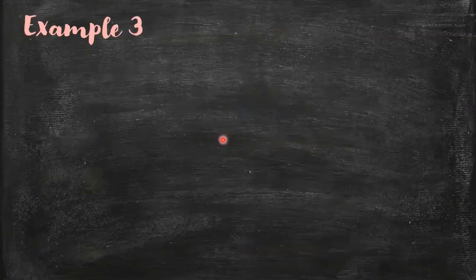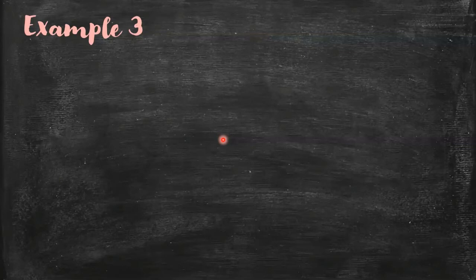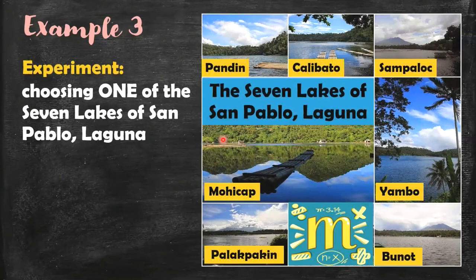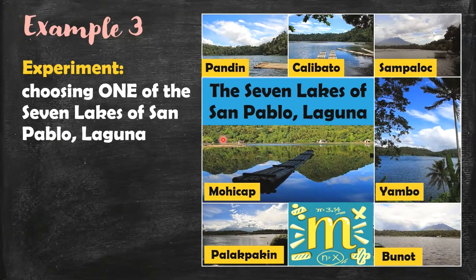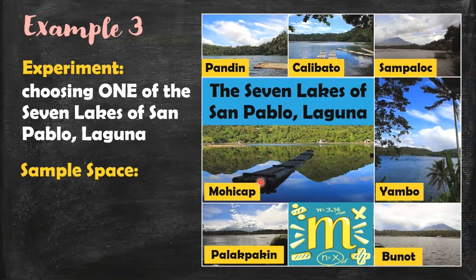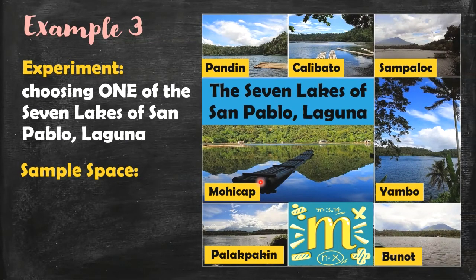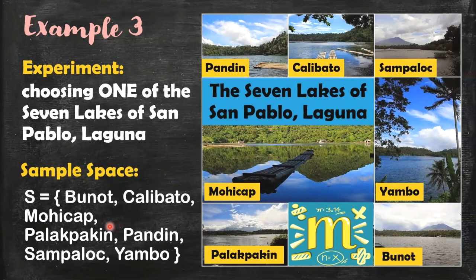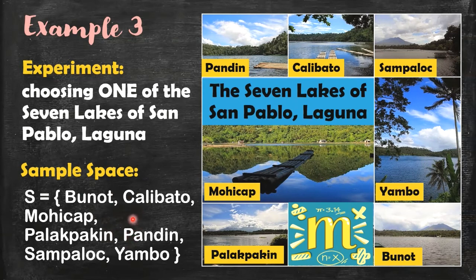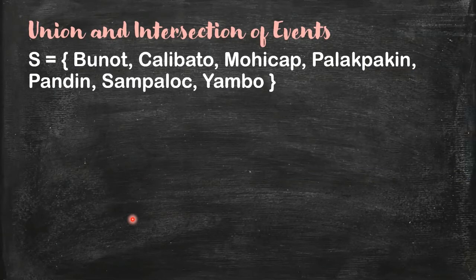Let's have another example so you can better understand union and intersection of two sets. Let's have this experiment: choosing one of the seven lakes of San Pablo, Laguna. Here they are. There are seven: one, two, three, four, five, six, seven. So if I ask you to give me the sample space, the sample space has seven elements. So I listed down all the lakes in alphabetical order. Again, the order does not matter in listing down the elements of a given set. Even if the elements are jumbled, it's still okay, they're the same. I'm just going to write again here the sample space. So it contains all the seven lakes of San Pablo, Laguna.